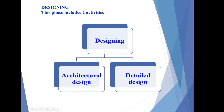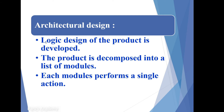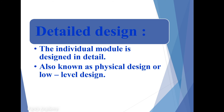Next is designing. In this phase we have two activities: architectural design and detailed design. Architectural design is the logical design of a product — the basic design. The product is decomposed into a list of modules here. Each module performs a single action. That is architectural design: a logical design where the product is divided into small modules, each performing a single action.